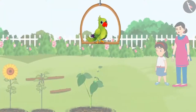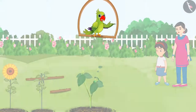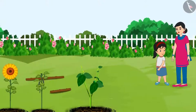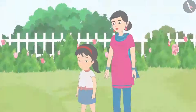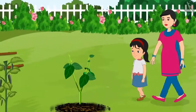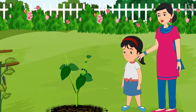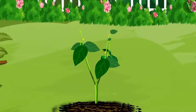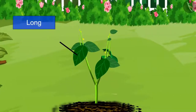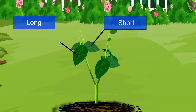Today is Sunday and Pinky and her mother have gone to the garden for a walk. Pinky says: Mummy, look at that plant. All of its leaves are different. Her mother replies: Yes Pinky, come let's go closer and look at it. Mummy, look at these two leaves. They both are different. Yes Pinky, the length of both of these leaves is different. Out of these two leaves, this leaf is long and this leaf is short.